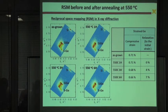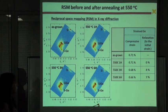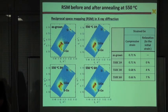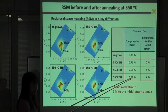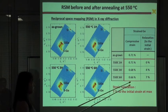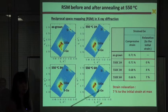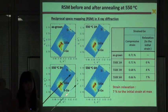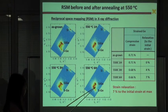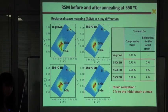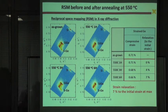After diffusion annealing at 550 degrees for 6 hours, the strain became 0.66%, which is only 7% relaxation compared to initial strain. So our sample, especially strained germanium, is pseudomorphic, almost pseudomorphic to the silicon germanium layers.